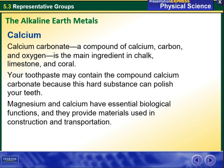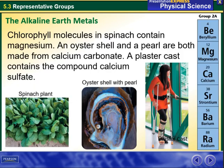Calcium carbonate, a compound of calcium, carbon, and oxygen, is the main ingredient in chalk, limestone, and coral. Your toothpaste may also contain calcium carbonate because this hard substance can polish your teeth. The alkaline earth metals are beryllium, magnesium, calcium, strontium, barium, and radium. Chlorophyll molecules in spinach contain magnesium. An oyster shell and a pearl are both made of calcium carbonate. A plaster cast contains a compound of calcium sulfate.